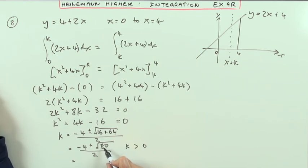Now 80, that's 16 times 5, that's 4 root 5. So I've got negative 4 plus 4 root 5, or negative 2 plus 2 root 5 would be the actual value.